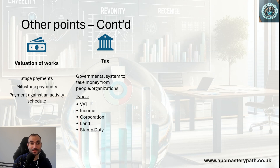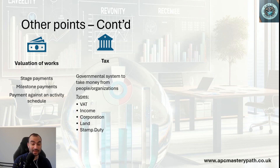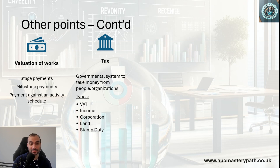Taxation is a mechanism by which the government collects money from people and firms to spend on health, education, and defence. There are a number of types of taxes in different countries. Here in the UK, you can find value added tax, income tax, corporate tax, stamp duty, and land tax — with stamp duty applying specifically to properties.